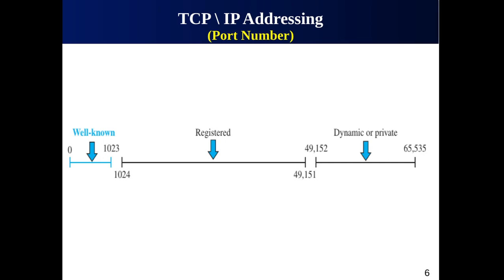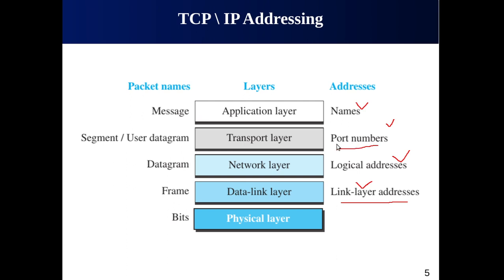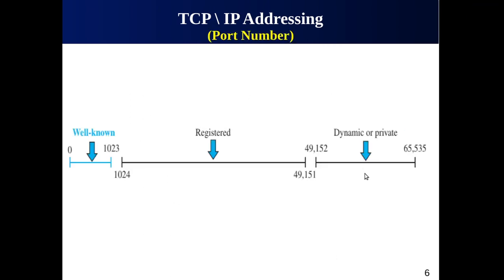Let's go deeper into port numbers. A computer can run several programs at the same time. For communication, we must define the local host, local process, remote host, and remote process addresses. For local host and remote host we can use network addresses, but for local and remote processes we need port numbers. IP addresses are used for host identification, while port numbers are used to define the processes. In the TCP/IP protocol suite, port numbers are integers between 0 and 65535 and each port address is made of 16 bits.